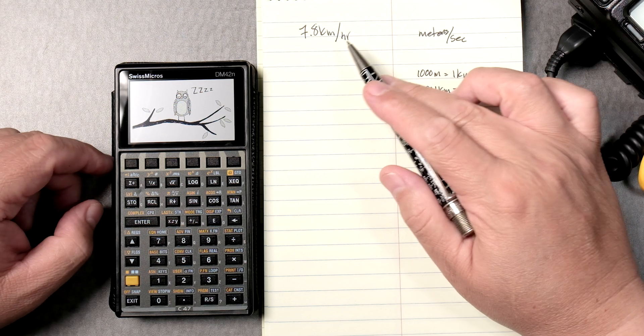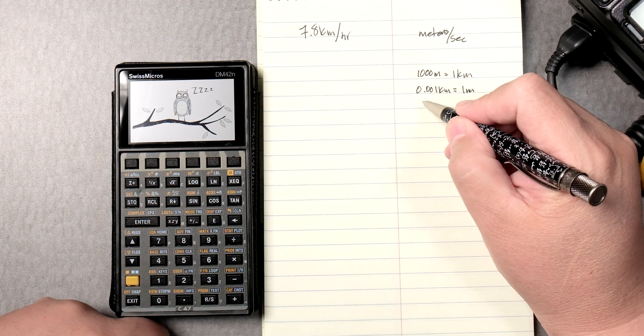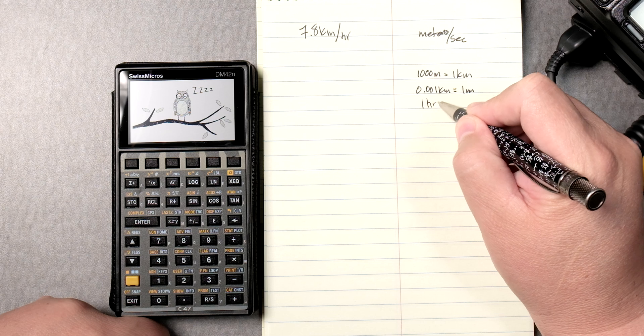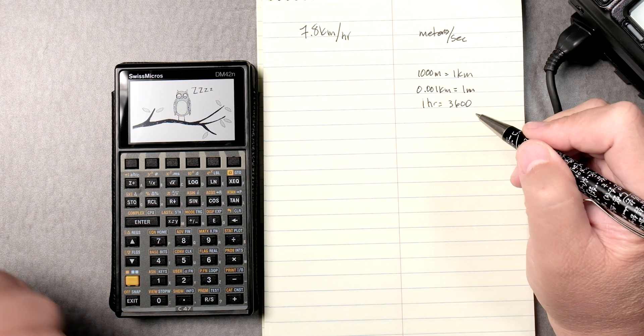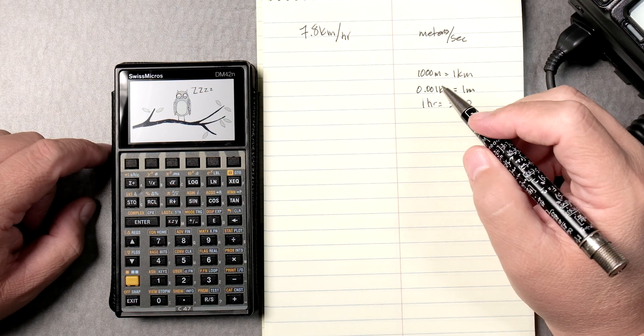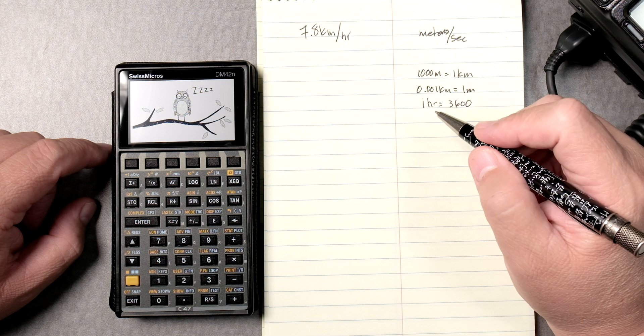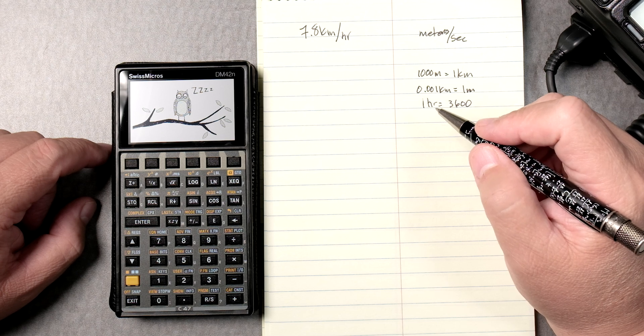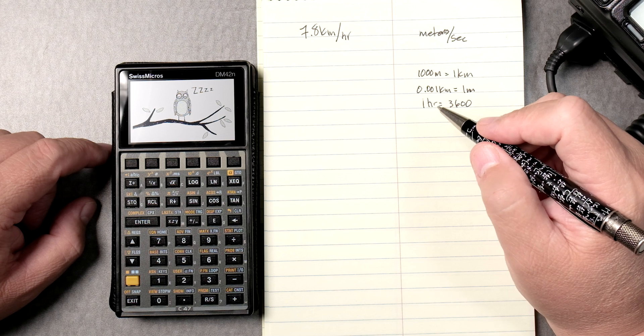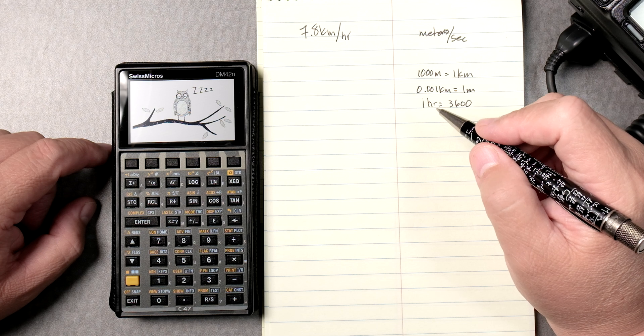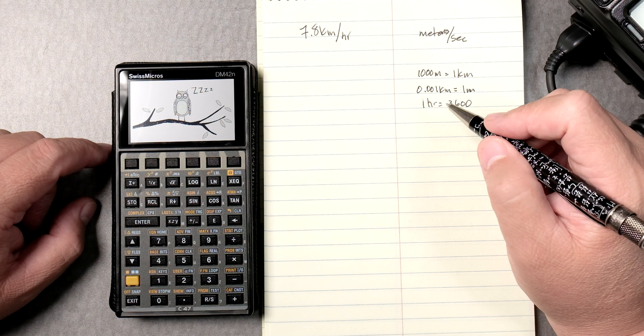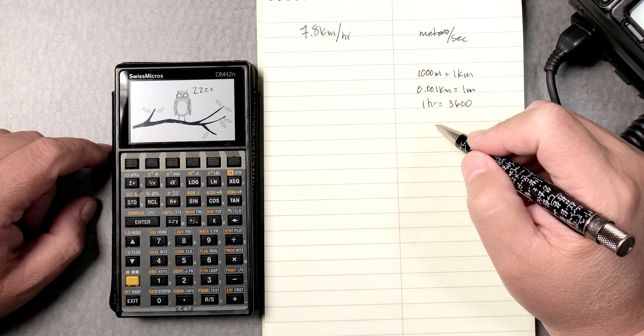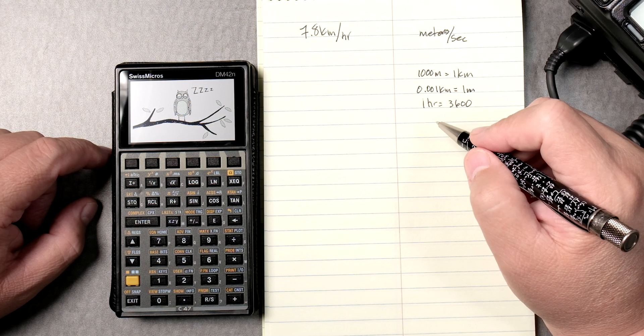And then the hours to seconds. Well, for every hour, there are 3,600 seconds. Because if you think about it, in one hour, there's 60 minutes. And in 60 minutes, there are 60 seconds. 60 times 60 is 3,600. So we can think of it that way.